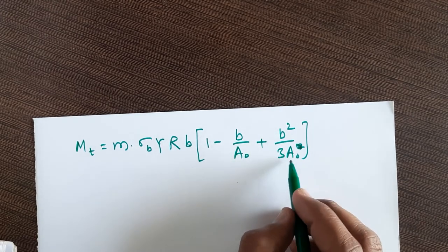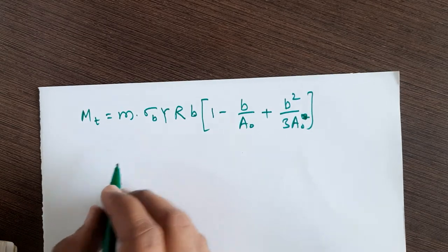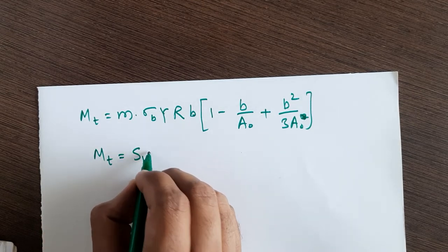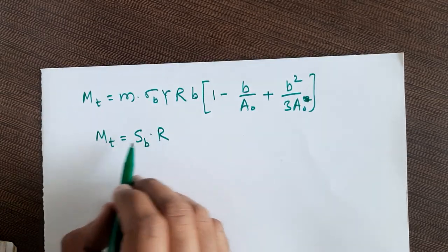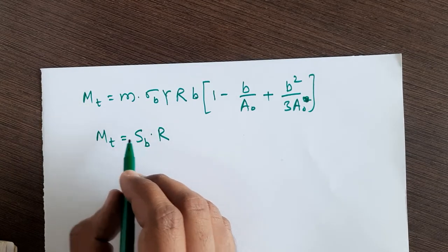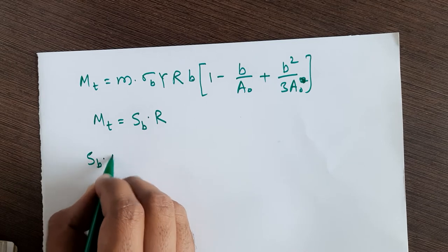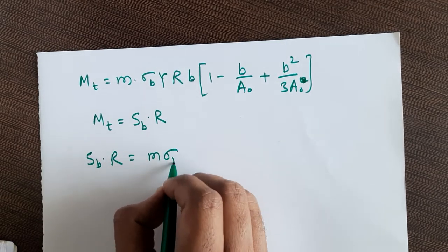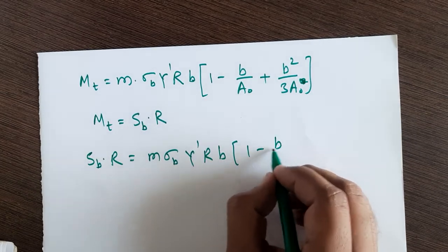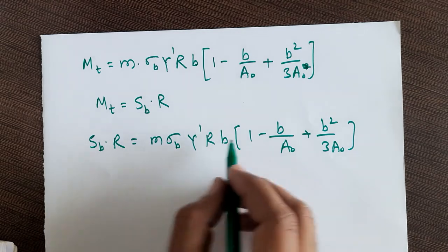Assuming the beam strength is a tangential force at the large end, torque equals tangential force at the large end multiplied by radius — force into perpendicular distance. Comparing these two equations, you get: Sb · r = m·σb·y'·r·b·(1 - b/a₀ + b²/(3a₀)).